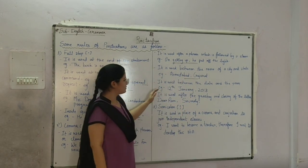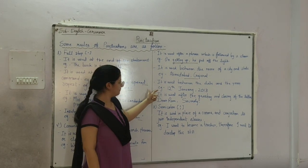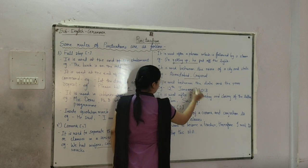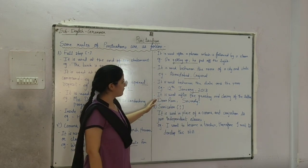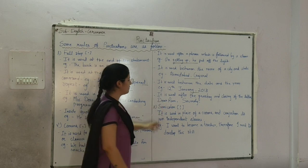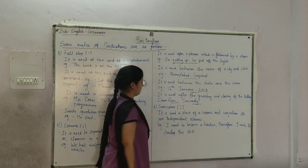It is used between the date and the year. For example, 3rd of January, 2018. It is used after the greeting and closing of the letter. Dear Ram, and Sincerely.